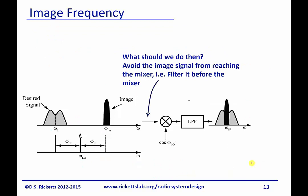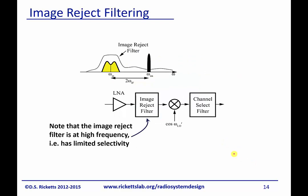To avoid the image, we put in what's called an image reject filter. The idea is to filter out all frequencies occurring at the image frequency, which is omega_LO plus omega_IF. The challenge is that filters have a finite absolute bandwidth. So we want the image frequency to fall well into the attenuation region of the filter, which means we want the image to be far away from the passband.